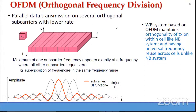4G and 5G are wideband systems and they depend on OFDM for high data rate. That is because of the special nature of OFDM — the entire bandwidth is divided into sub-channels.